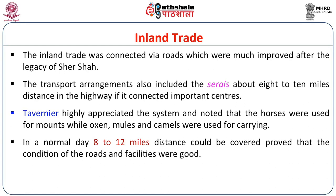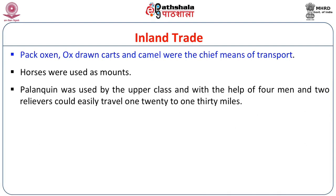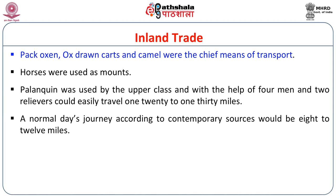Tavernier especially appreciated the system and noted that horses were used for mounts while oxen, mules and camels were used for carrying goods. In a normal day, 8 to 10 miles distance could be covered, proving that the roads and facilities were good. Pack oxen, ox-drawn carts and camels were the chief means of transport. Palanquins used by upper classes with four men and two relievers could travel 120 to 130 miles, though that was not a normal means of communication. A normal day's journey covered about 8 to 12 miles, which was faster compared to medieval Europe.